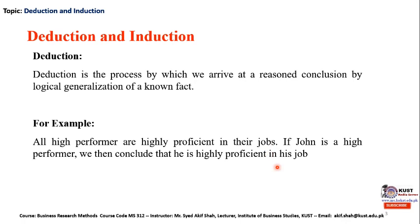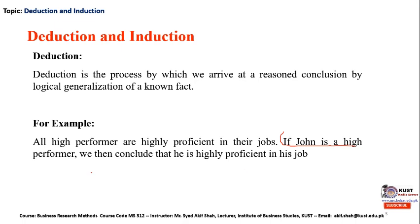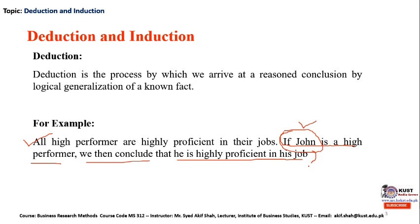Anybody who is a high performer or hardworking person is generally considered highly proficient in their jobs when employed. So on the basis of this generalized known fact, we conclude that if John is a high performer, therefore he is highly proficient in his job. We have deduced our specific problem to find out whether John is highly proficient in his job or not, based on a known generalized fact. Such a mechanism is known as the deduction process of research.